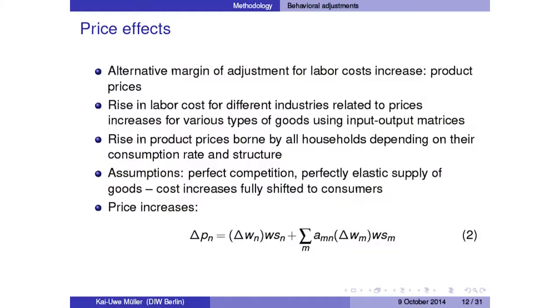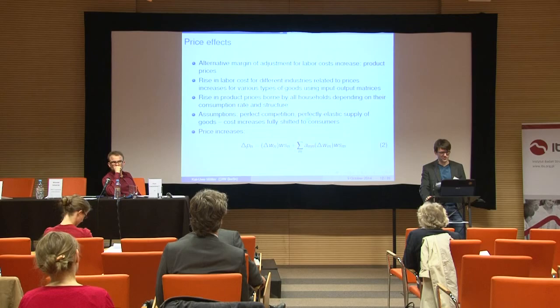Finally, we also calculate the consequences for prices. Besides employment, another margin of adjustment for firms is obviously to adjust prices. We translate increases in wages and labor costs through input-output matrices into price changes in different categories of goods — with strict assumptions of perfect competition and perfectly elastic supply of goods, meaning all cost increases can be shifted to consumers. In reality that won't be the case, but since we don't have an estimate we assume this for simplification.